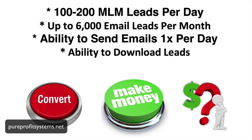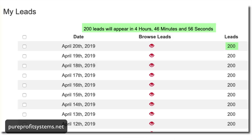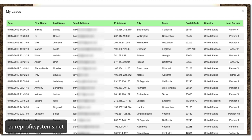Down in the description, you'll see a link to the program we started to promote because we needed more free MLM leads. In this particular program, you get 100 to 200 MLM leads per day, every day — 3,000 to 6,000 network marketing leads per month for only $30. You also have the ability to send an email to those leads once per day, every 24 hours, using their built-in MLM lead generation mailing system. You can also download the leads. They come with the date the lead was generated, first name, last name, and email address — everything you need to start generating your own free MLM leads.